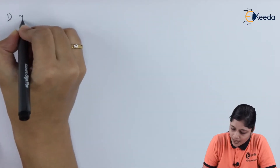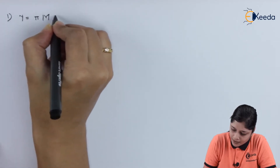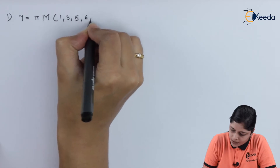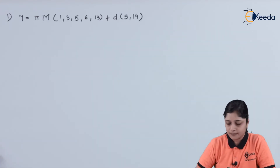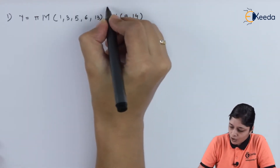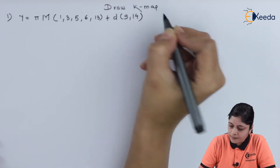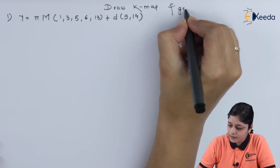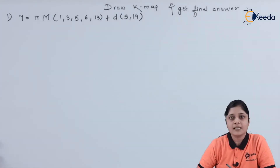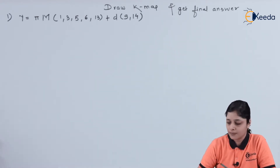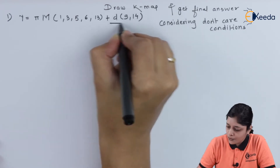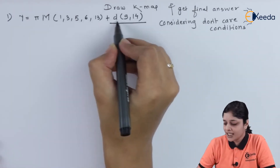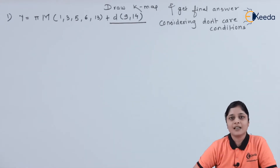Your first example is: Y is equal to product of max terms (1, 3, 5, 6, 13) plus d inside the bracket (9, 14). Your aim is to draw the Kmap and get the final answer considering the don't care conditions. The terms d(9, 14) are the don't care conditions.